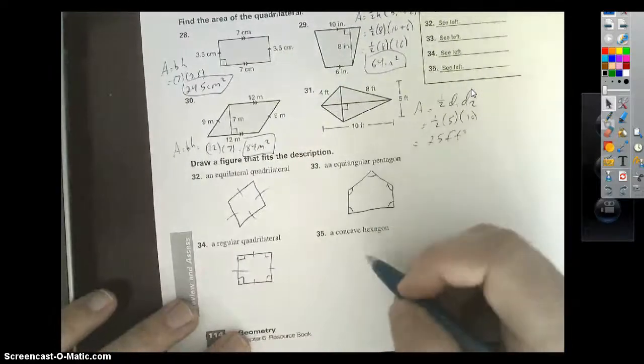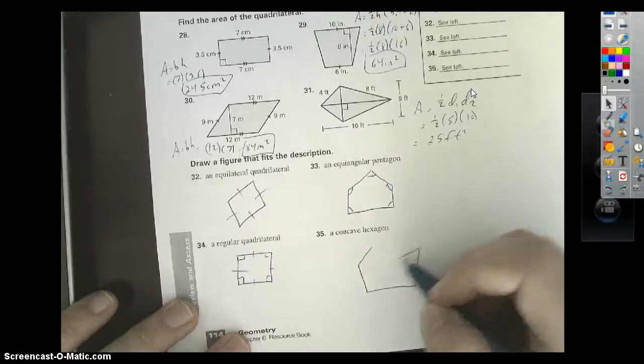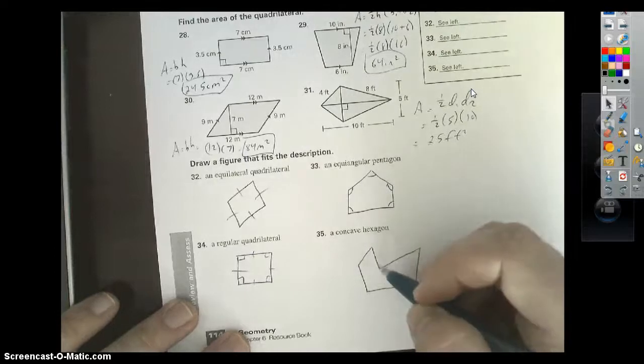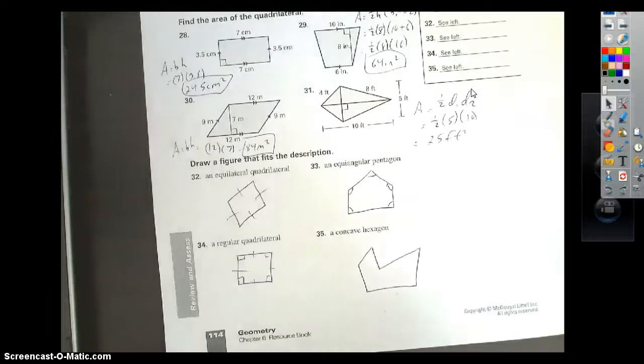A concave hexagon. Let's see here. One, two, three, four, five, six. Six sides, and it's going inward. So there's your concave hexagon. Hope this video helped. Good luck studying for your tests, and we're all counting on you.